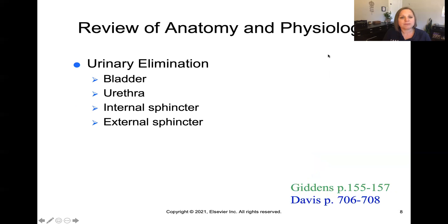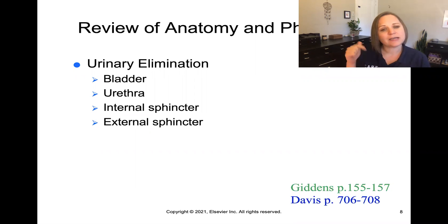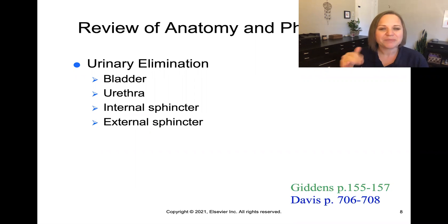Now let's talk about urinary elimination in terms of anatomy and physiology of the urinary tract. On the screen are the different organs and components of the urinary tract — the bladder, the urethra, and the internal and external sphincters. I'm going to link a six-minute video below that quickly and easily discusses the anatomy and physiology of the urinary tract, so go ahead and pause here and watch that video now.